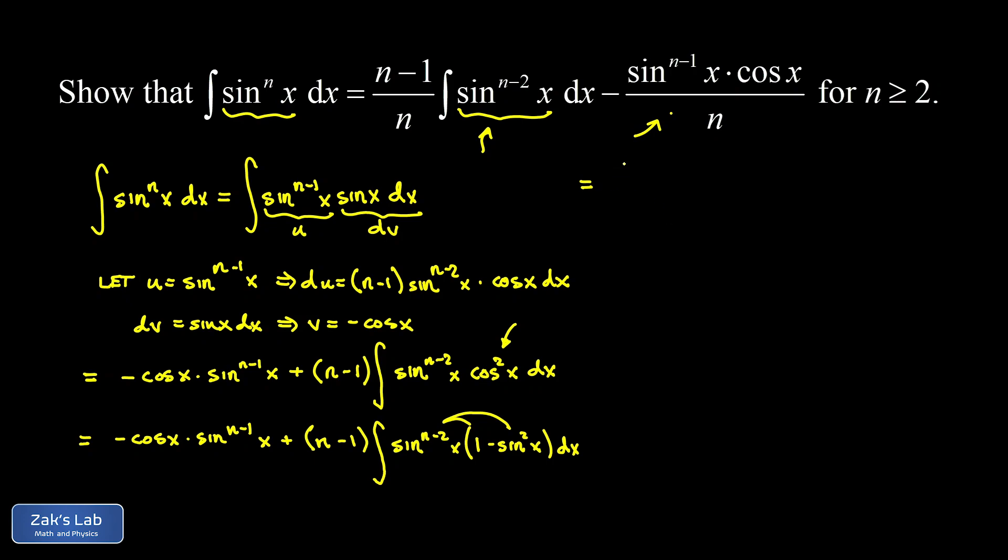I'm going to split this up into two integrals now. This term out in front is still a spectator. My first integral is going to be the integral of sine to the n minus 2 of x dx. And then my second integral comes with a minus sign, it's going to be minus n minus 1 integral of sine to the nth of x dx.